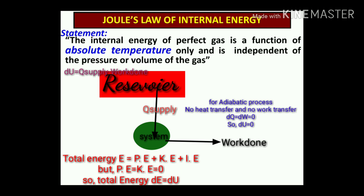For an adiabatic process there is no heat transfer or work transfer, so dQ = dW = 0. Since potential energy and kinetic energy are considered zero for this system, total energy equals internal energy. Therefore, internal energy is zero for the adiabatic process.